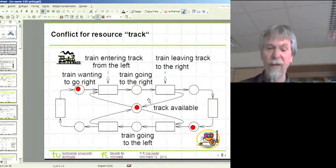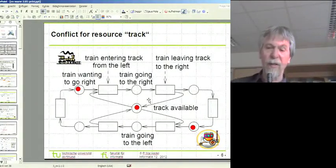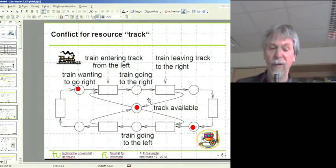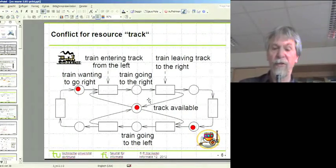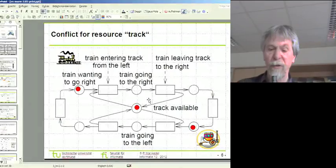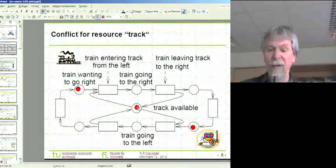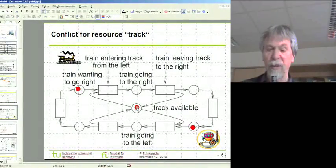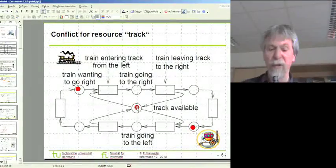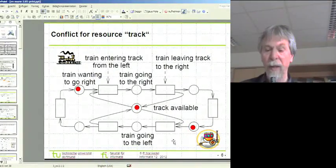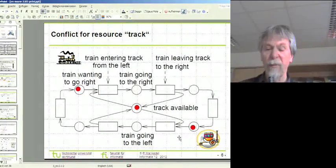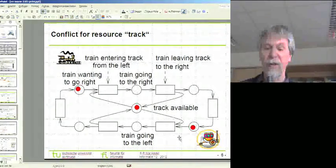Now with the token game and in general with Petri Nets we can model also the situation in which there is a conflict for resources. So we see that this situation is one in which we have a conflict for the resource track, and the Petri Nets explicitly model such a conflict.